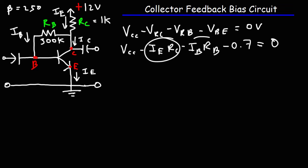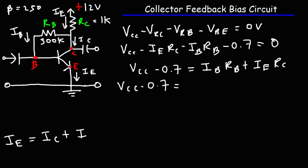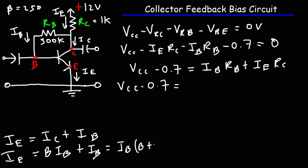Moving terms to the other side gives us VCC minus 0.7 equals IB times RB plus IE times RC. Since IE equals IC plus IB and IC equals beta times IB, we can express IE as beta plus 1 times IB. So replacing IE, we get IB times RB plus IB times beta plus 1 times RC.